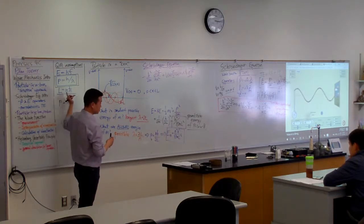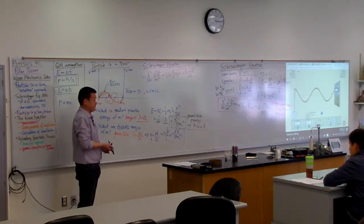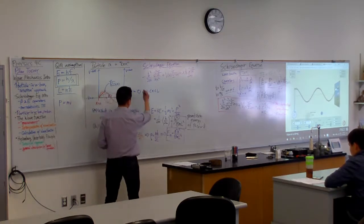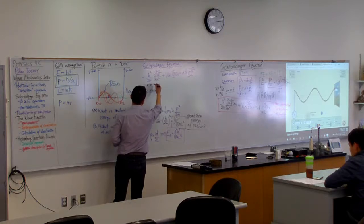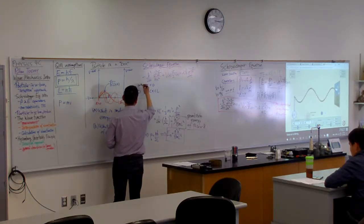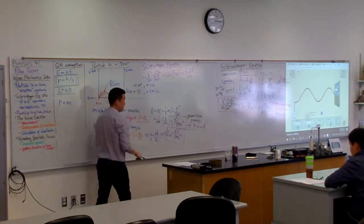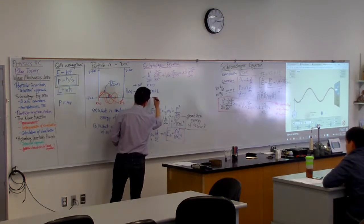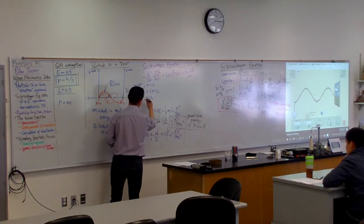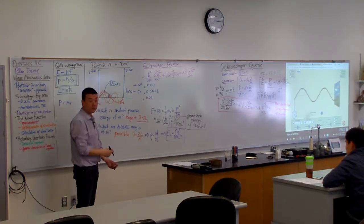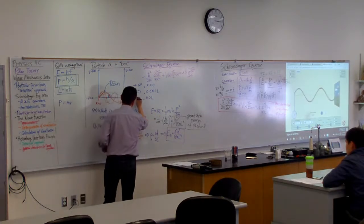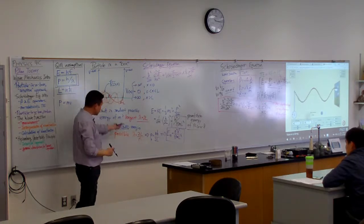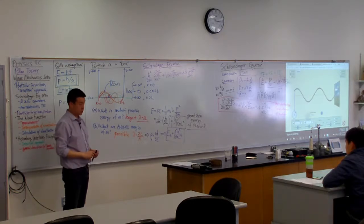How do I describe V here or here? What is the value of potential energy beyond x equals zero? Somebody said infinity — yes, infinity. So for x less than zero it's going to be infinity, or approaches infinity. What about x greater than L? Also infinity or approaches infinity.